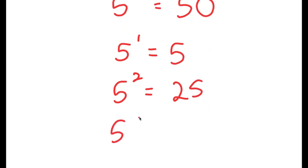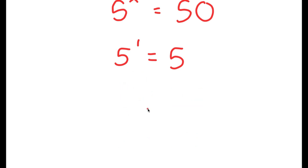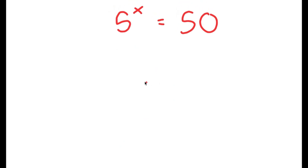If x equals 3, then I have 5 to the power of 3, which is 125, and this is way too high. So we know that the value of x is going to be somewhere in between 2 and 3, meaning it's going to be a decimal. To find the exact value of x, we're going to be using logarithms.